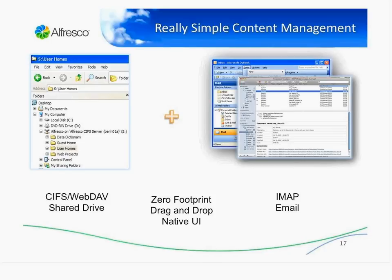Instead of having the repository natively support SIFT, we make it natively support IMAP. Just like before, you can have a folder in a shared file drive — you can just drag an email into a folder and it can be managed natively in Alfresco. Not only can we manage it within the repository in a traditional way, but if you drag it into a folder that's a records management folder, you can apply records management rules onto your email as well.